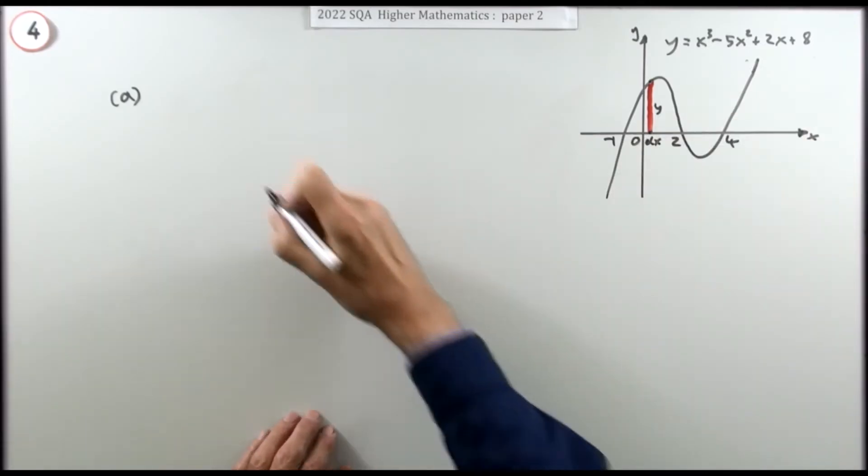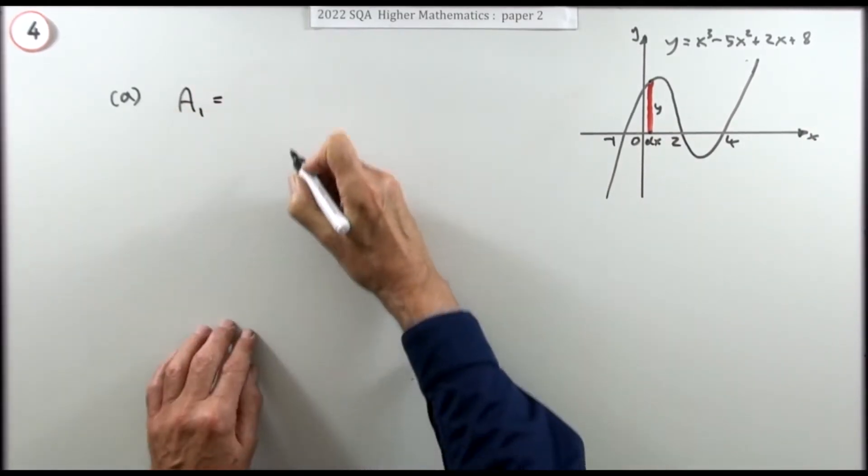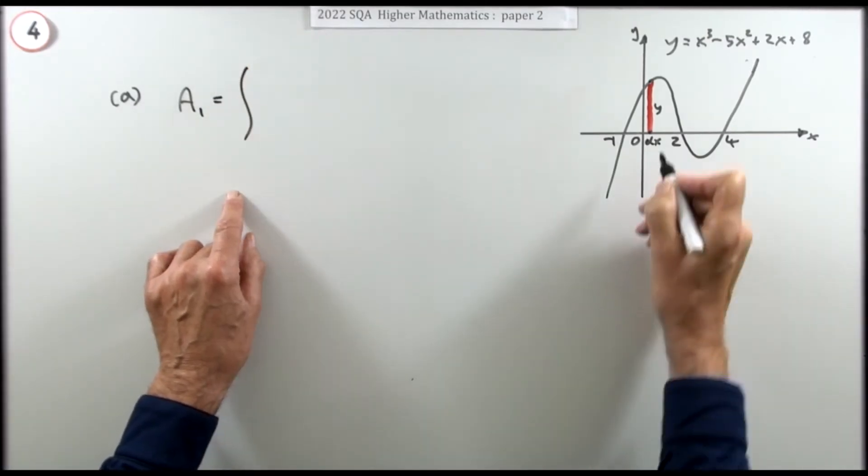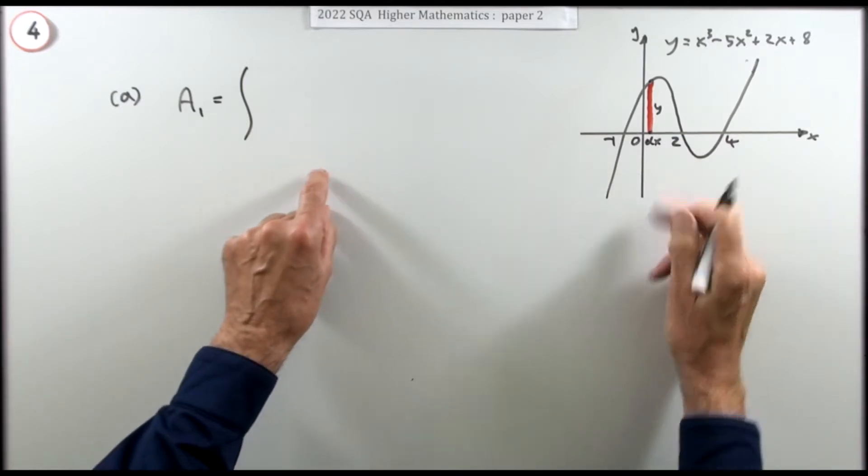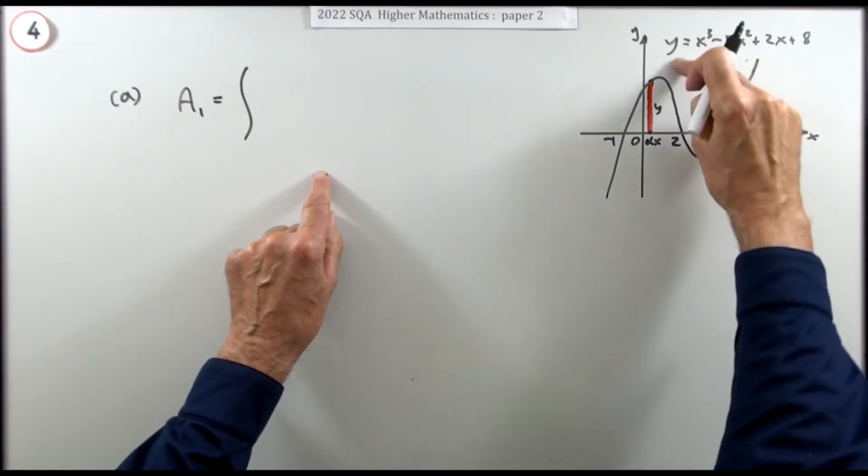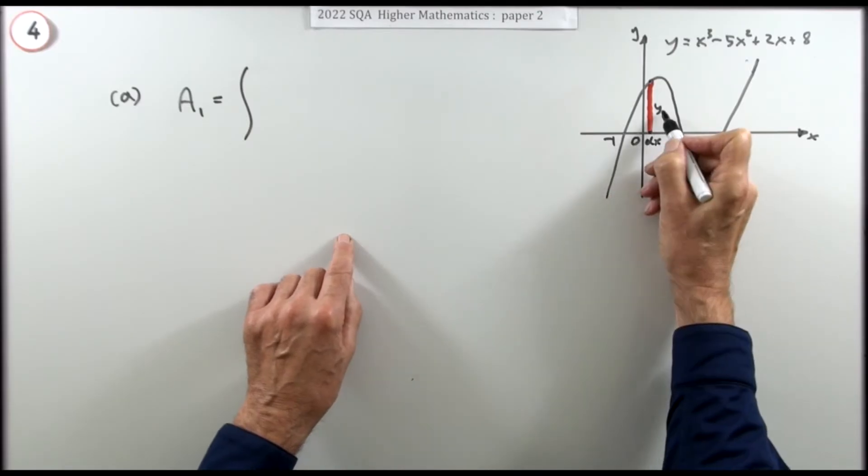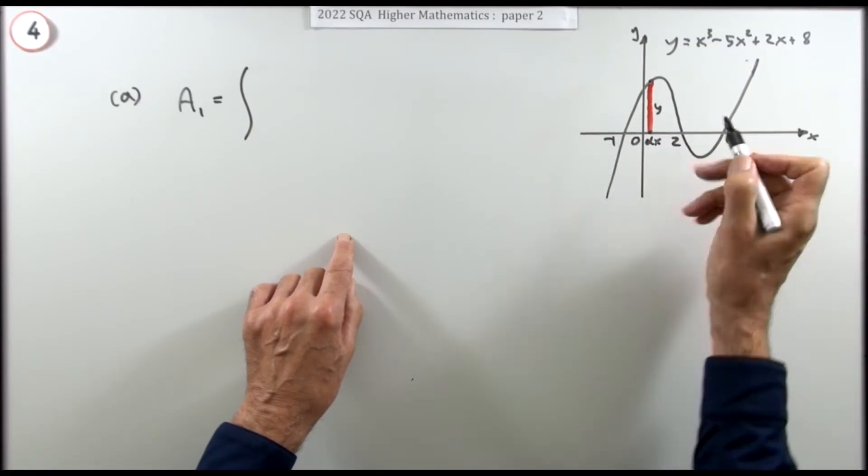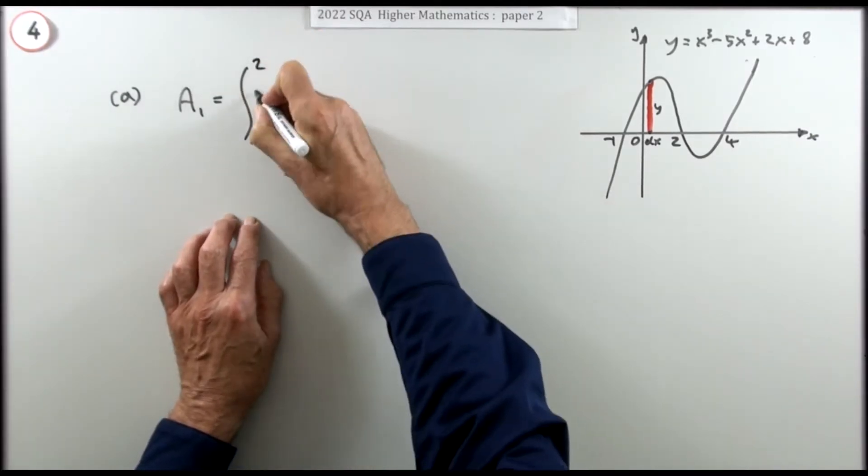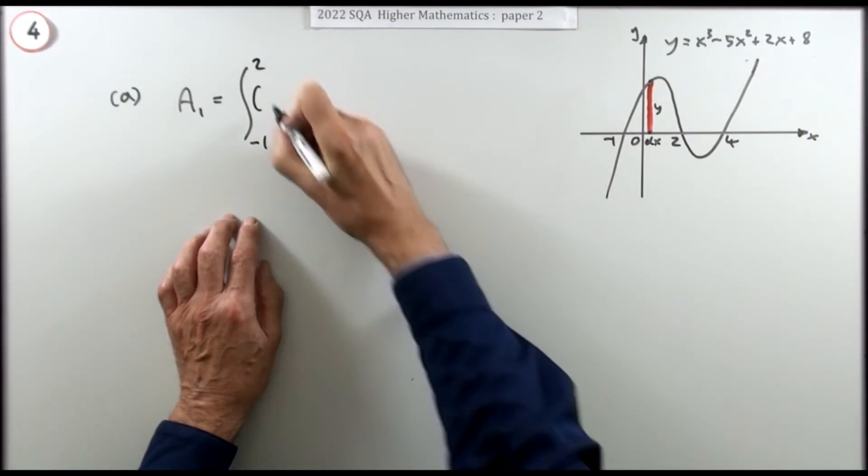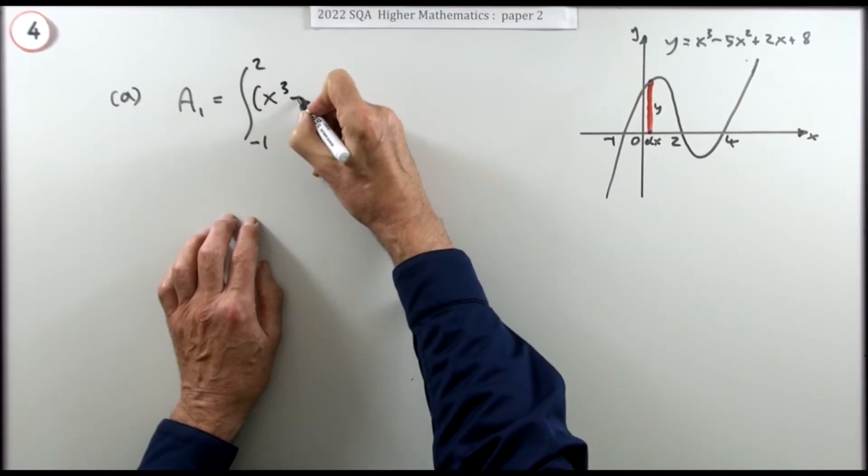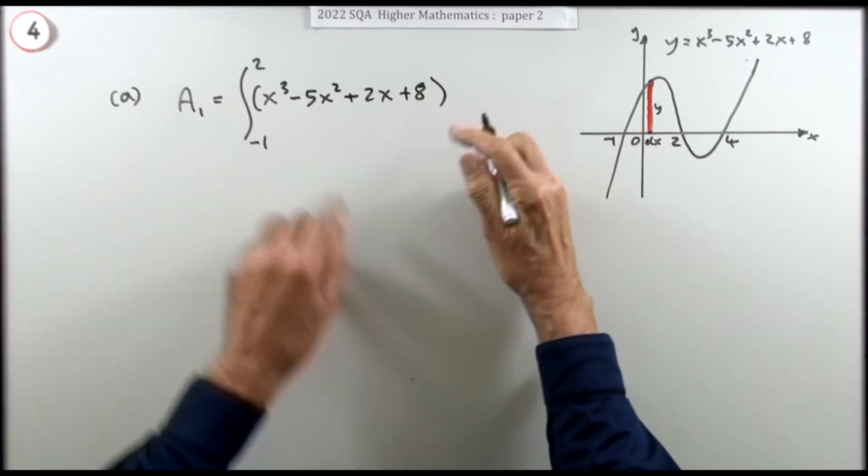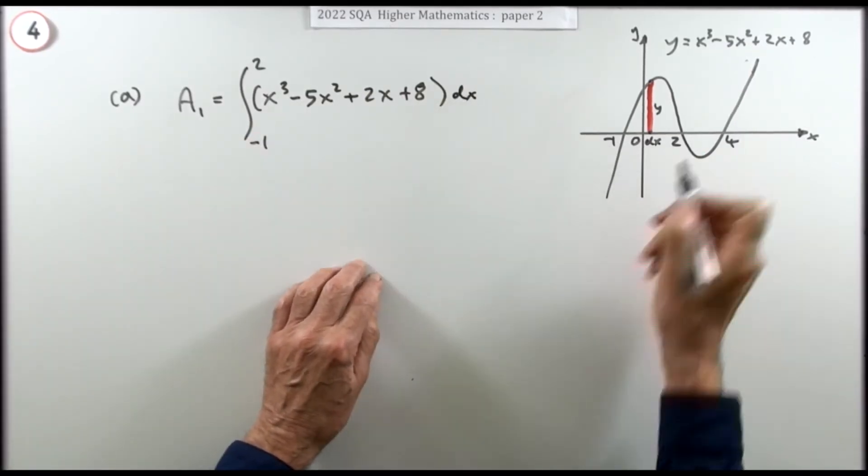You add them all up to get the area, so the area in the first part, we'll call it area 1, is the sum of, that's that integral sign, the sum of all these little rectangles, all these areas, the y times the dx, this times the dx, starting with whatever y is at negative 1, and then finishing with the value when x is 2. So going from x is negative 1 to x is 2, you add up all the heights, the heights are all given by this, notice they're in a bracket, because there's more than one term there, to multiply that little dx.